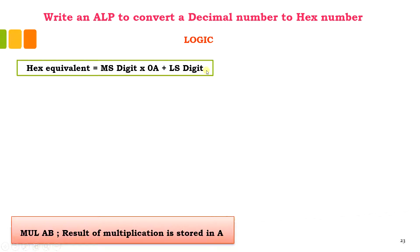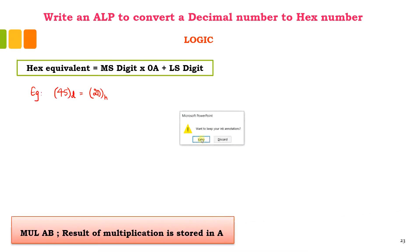Let me explain this with an example. I will consider an 8-bit decimal number — the decimal number 45 — and the equivalent of this in hexadecimal is 2DH. You might be wondering how I got this; I can directly compute this using a calculator or using an online tool.